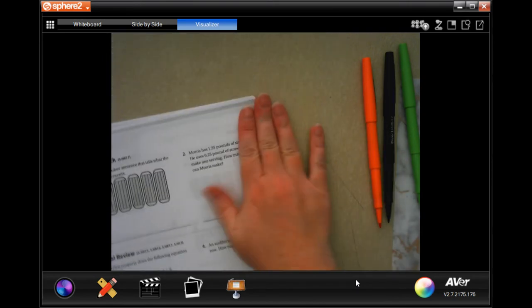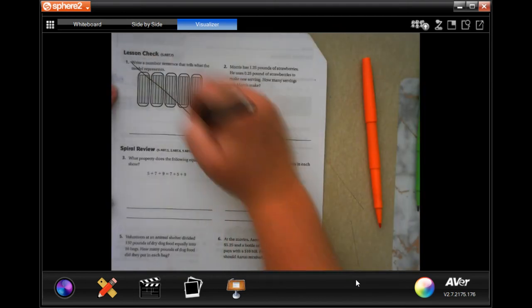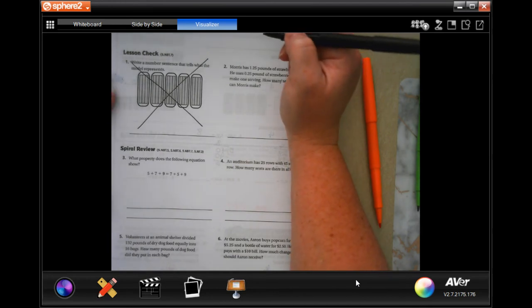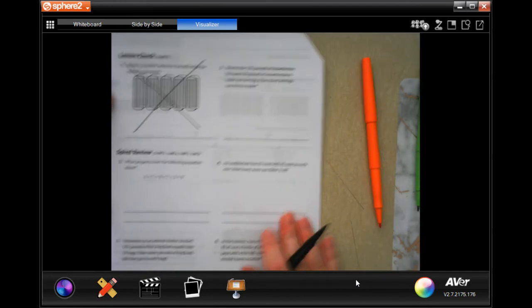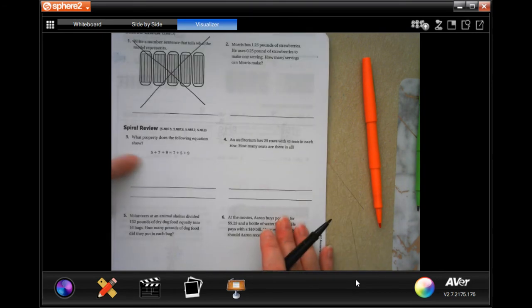All right, we're going to go to the back. You do not have to do number one if you are one of our kids. Number two, you guys are going to go ahead and do that on your own. We are going to do spiral review together.